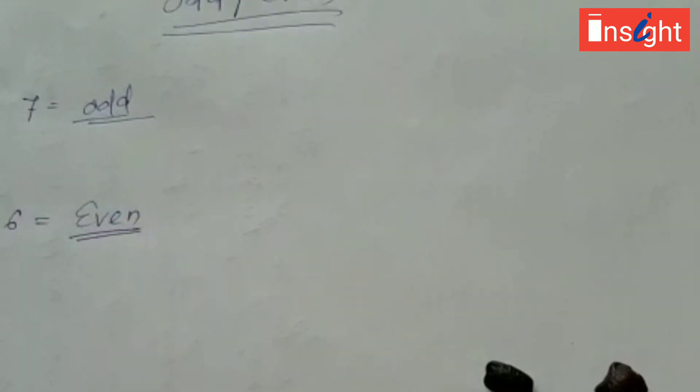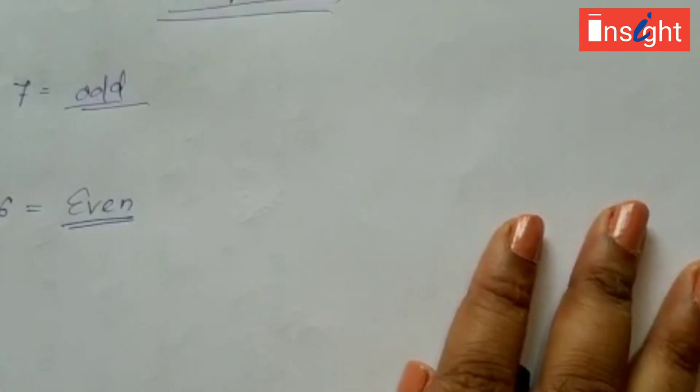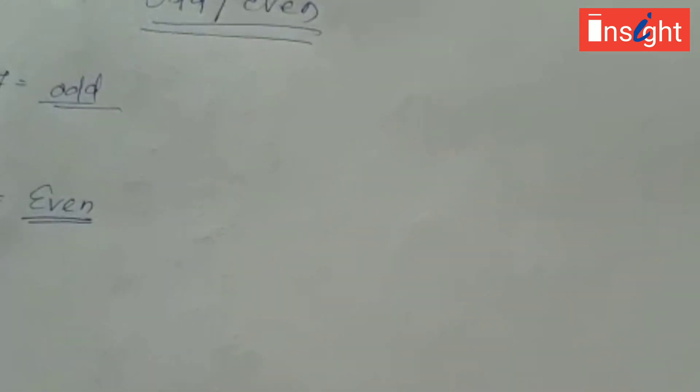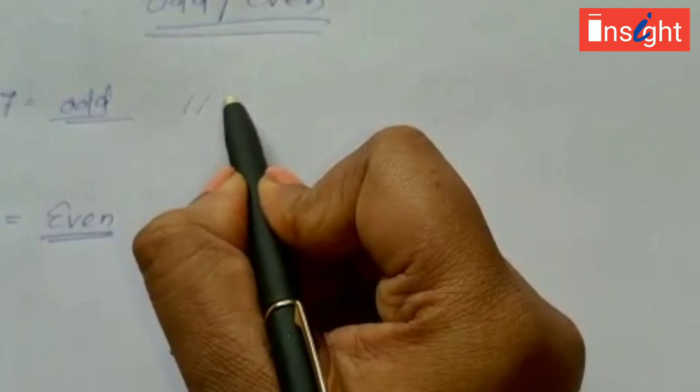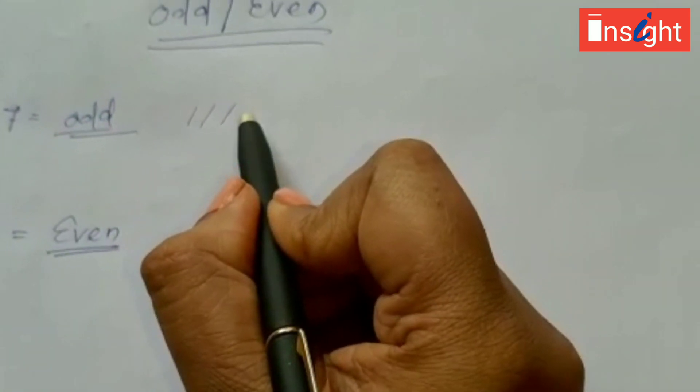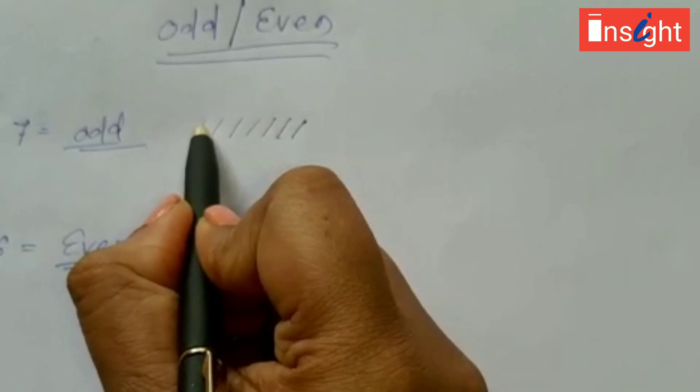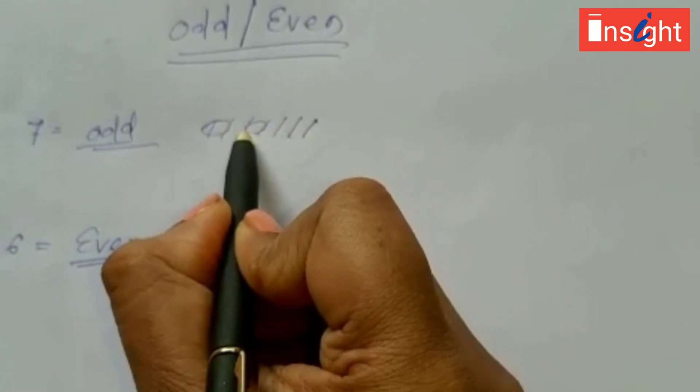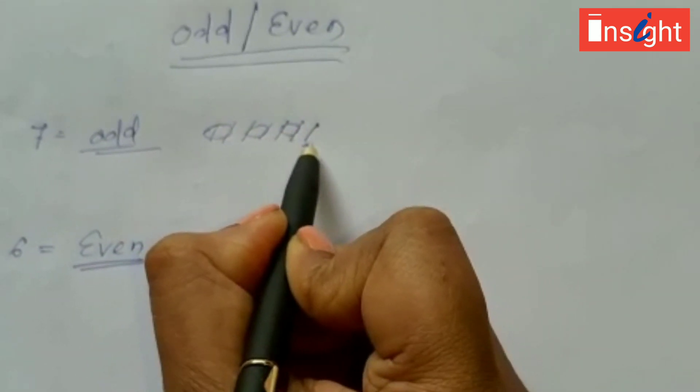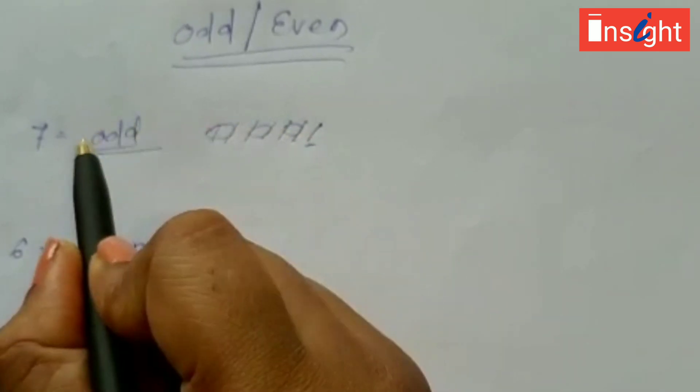Now second process: there is no need of seeds. Just draw some lines as per the number given here. Seven means I have to draw seven lines. Now make two of each pair. See, one stick is left, remains unpaired, so it is odd.